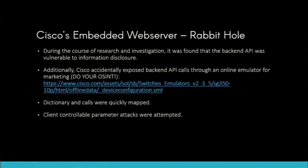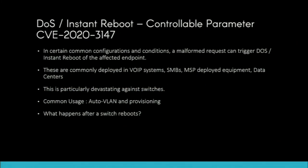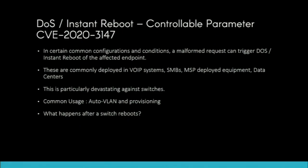Another web app hacking tip: enumerate the application before you start attacking it, because you want to know all the things you can play with. After mapping the application and playing with client-controllable parameters, I found a critical DOS instant reboot vulnerability on the Cisco small business line. In certain common configurations — and more than half of the situations you'll find will be in exactly this state — one malformed request will immediately reboot the device and bring it back up.